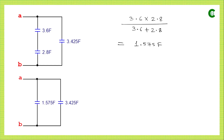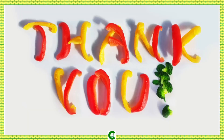So the 1.575 farad capacitor and the 3.425 farad capacitor are connected in parallel. This is the final circuit. Since they are connected in parallel, their values are simply added, and the final equivalent capacitance of the whole circuit is 5 farad. I hope this class was meaningful for you. Thank you.